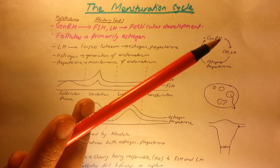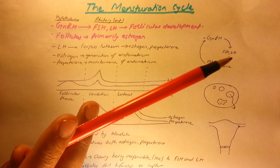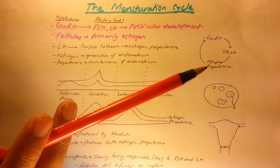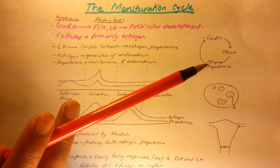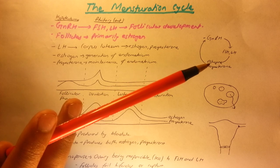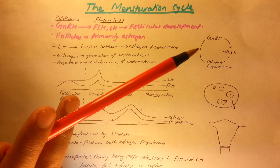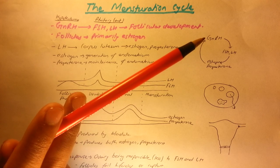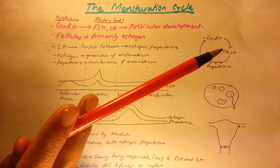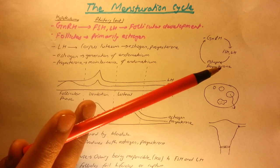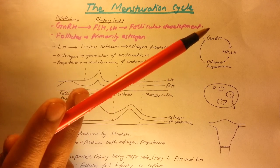Gonadotropin-releasing hormone stimulates the secretion of follicle-stimulating hormone and luteinizing hormone, which in turn stimulates the secretion of estrogen and progesterone. When estrogen and progesterone levels become high, they provide a negative feedback — high amounts of estrogen and progesterone cause lower secretion of GnRH, which in turn causes lower secretion of FSH and LH, and therefore lower production of estrogen and progesterone. This is a way they regulate their own levels.